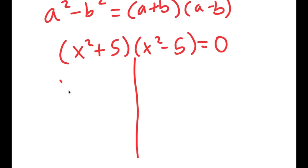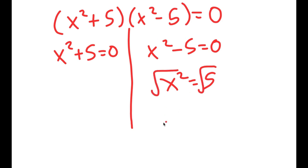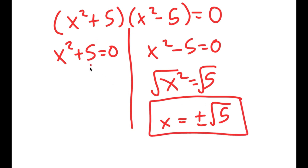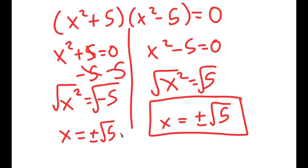So I get two equations: x squared plus 5 equals 0, and x squared minus 5 equals 0. For x squared minus 5 equals 0, I get x squared equals 5. If I take the square root on both sides, I get x is equal to positive or negative square root of 5. Now for x squared plus 5 equals 0, I can subtract 5 on both sides, so I get x squared is equal to negative 5. If I take the square root, I get x is equal to the square root of negative 5, which is equal to the square root of 5 times i.